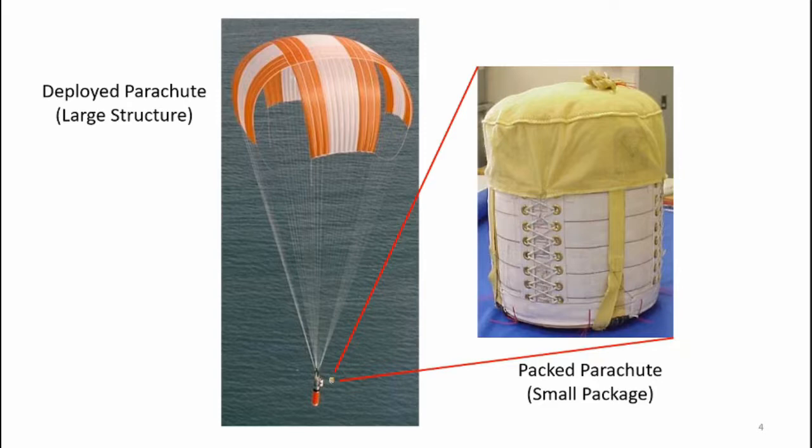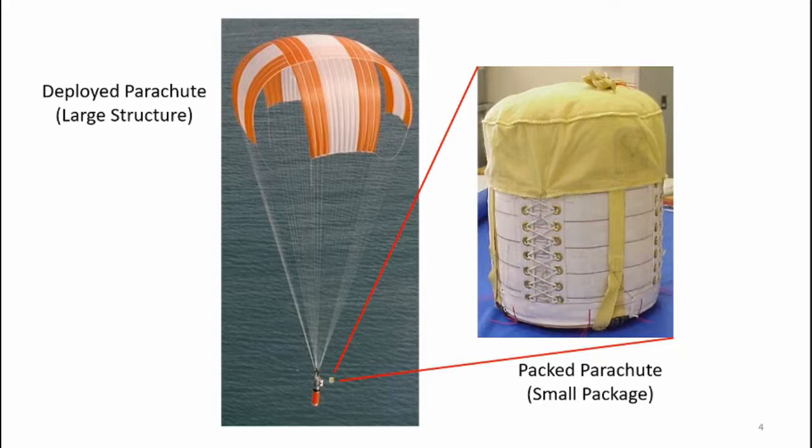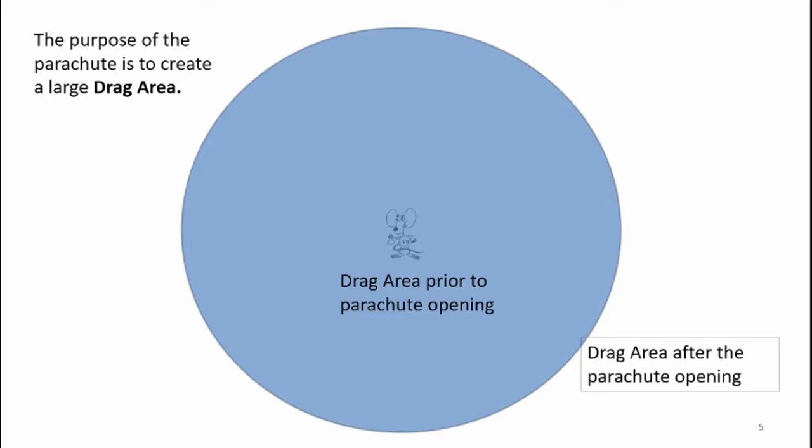The purpose of the parachute is to create a large drag area, which in turn creates a large drag. Here's Larry the LabRat — he represents a certain drag area prior to parachute opening. He deploys his parachute, the drag area becomes much larger, creating a much larger drag.